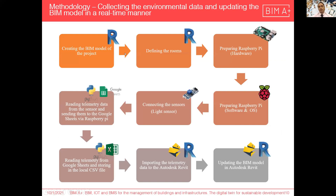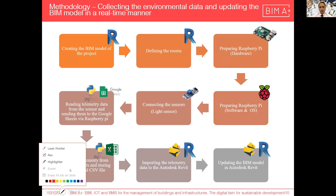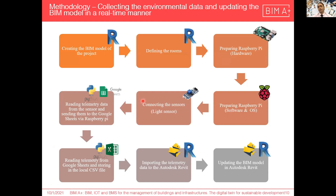For this process, you have to create the BIM model. After that, we define the rooms where our light sensors are installed. Then the Raspberry Pi should be prepared in terms of hardware, operating system, and software. The light sensor is connected, and telemetry data is transferred to Google Sheets via Python and the Google Sheets API. They can also be stored in a local CSV file through Python scripting. Finally, the BIM model in Autodesk Revit receives this data and modifies the BIM model through PyRevit scripting.